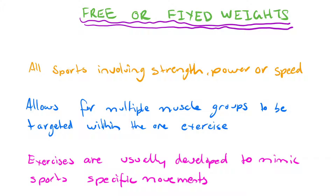Free or fixed weights are the weights most likely found in a school gym or small local gym, and this type of training is suitable for all sports involving strength, power, or speed. It allows for multiple muscle groups to be targeted within one exercise, or specific muscles can be isolated. Exercises are generally developed to mimic sport-specific movements — for example, a cyclist will focus more on weights targeting the lower body.